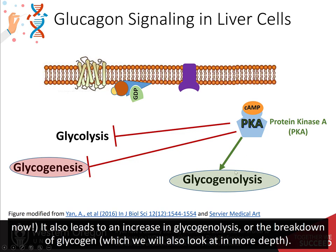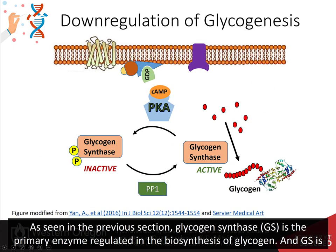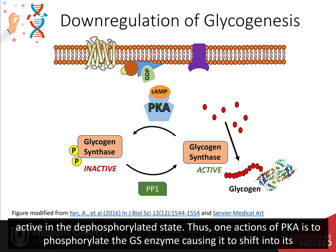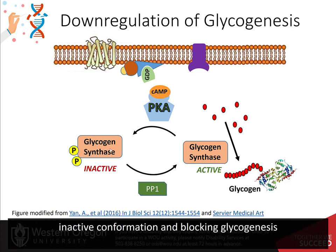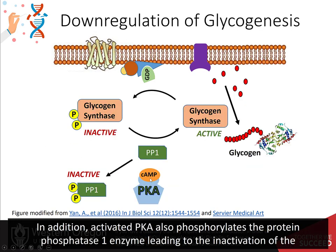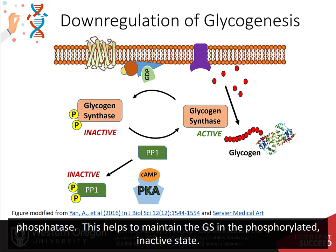Glucagon signaling also leads to an increase in glycogenolysis, or the breakdown of glycogen, which we will look at in more depth here. As seen in the previous section, glycogen synthase is the primary enzyme regulated in the biosynthesis of glycogen, and glycogen synthase is active in the dephosphorylated state. Thus, one action of protein kinase A is to phosphorylate the glycogen synthase enzyme, causing it to shift into its inactive conformation and blocking glycogenesis. In addition, activated protein kinase A also phosphorylates the protein phosphatase 1 enzyme, leading to its inactivation and helping to maintain glycogen synthase in the phosphorylated inactive state.